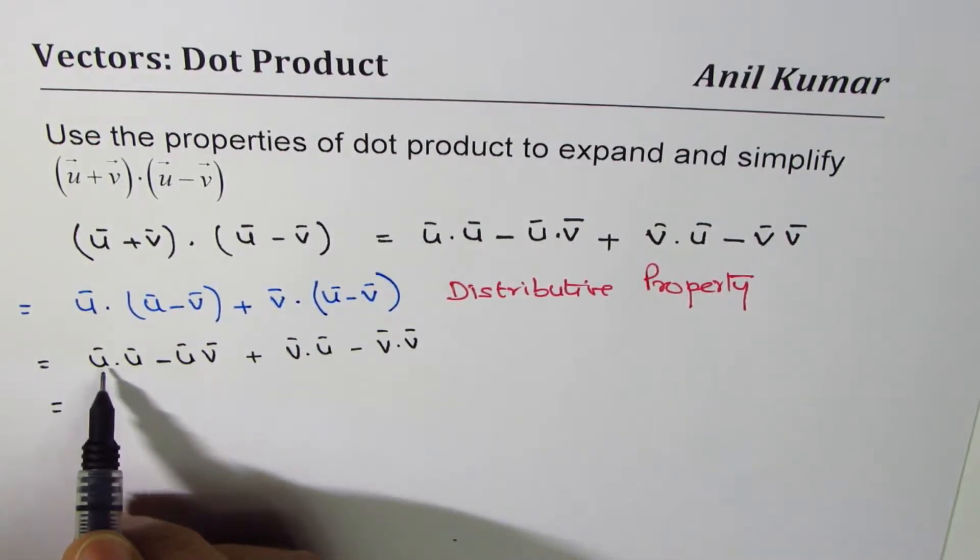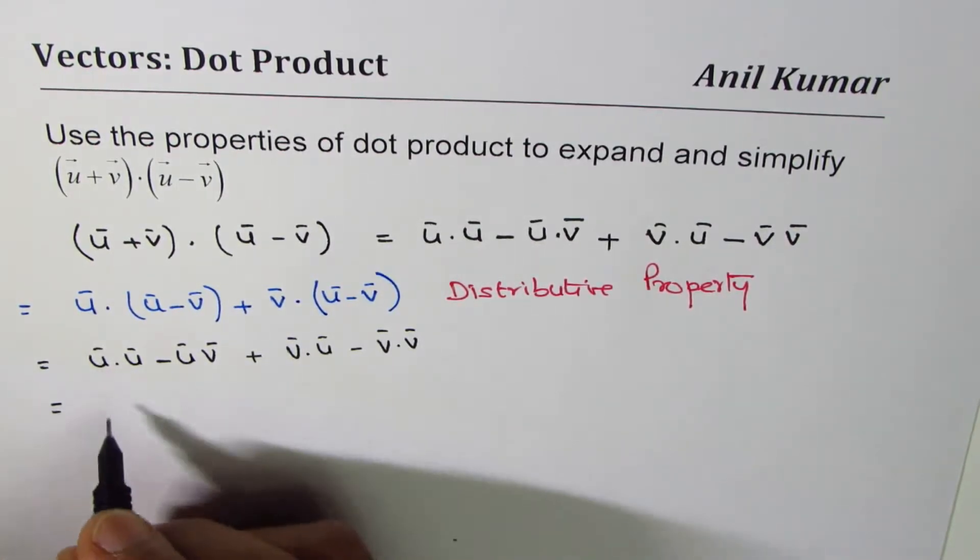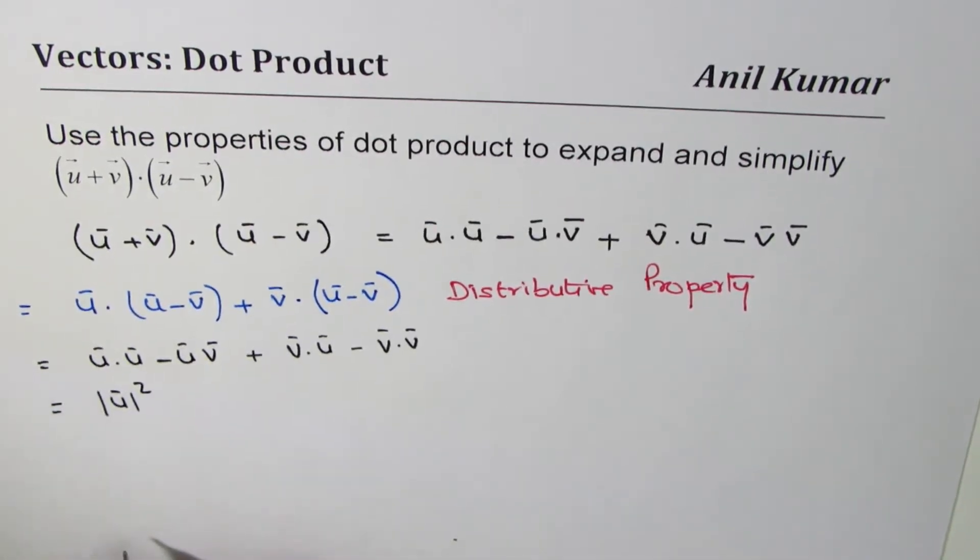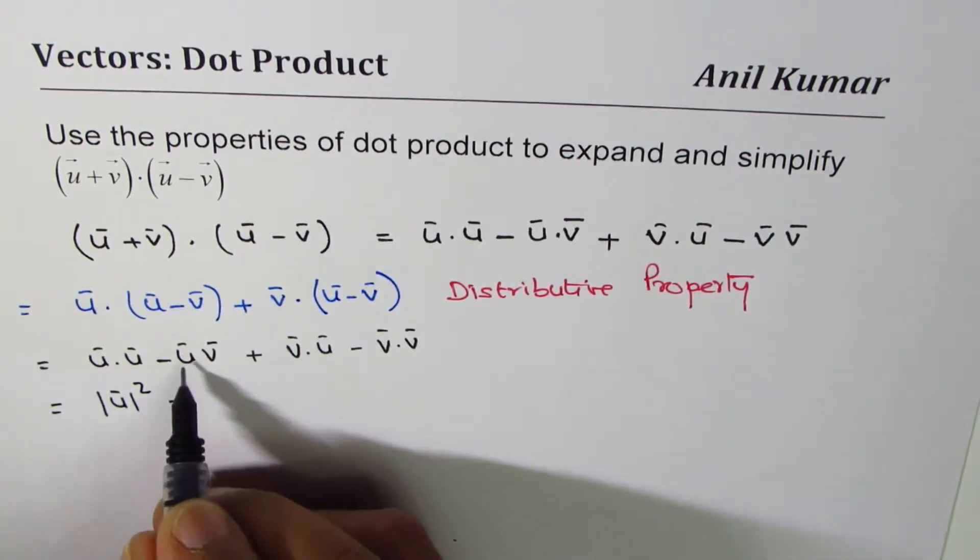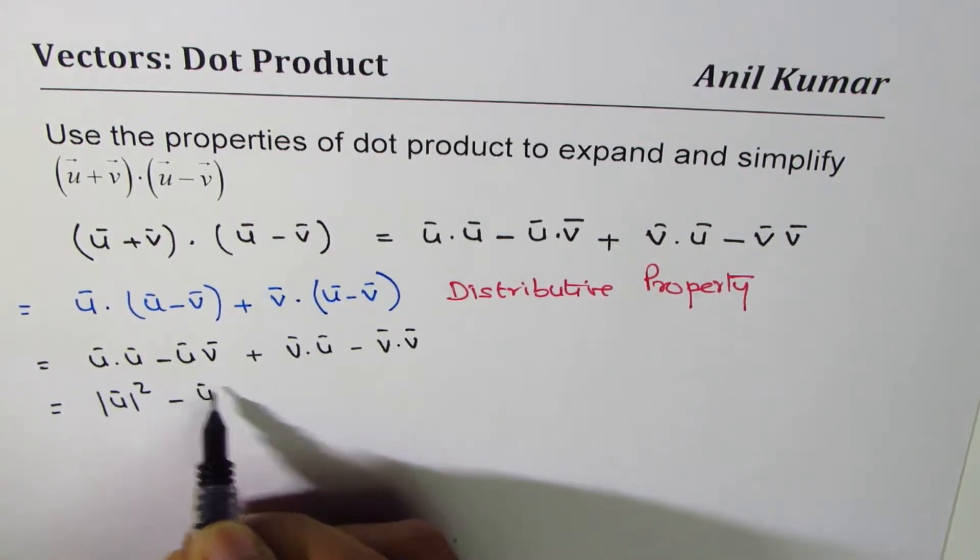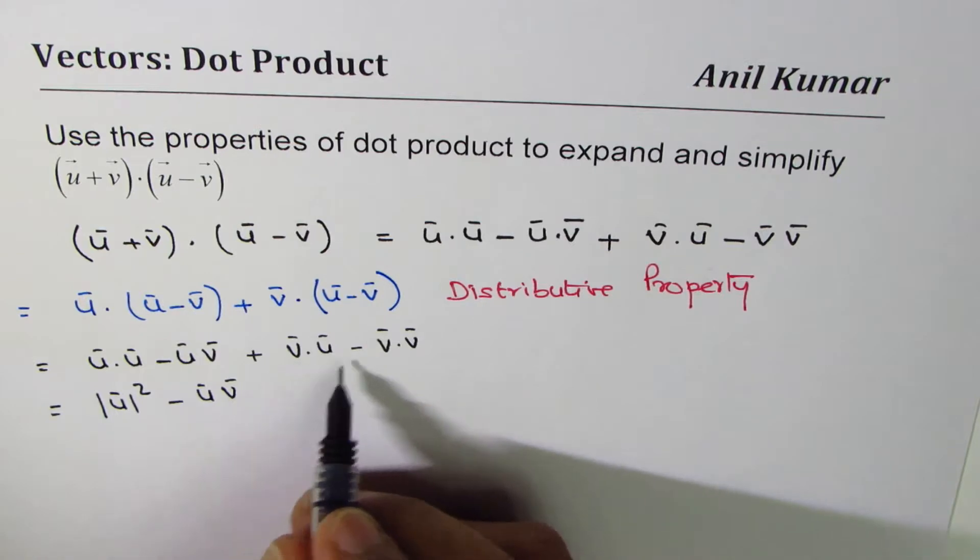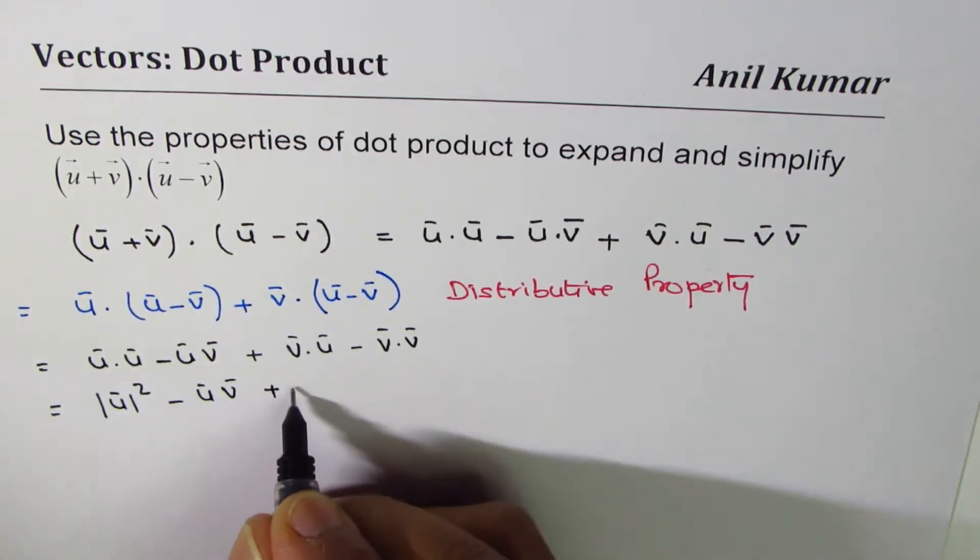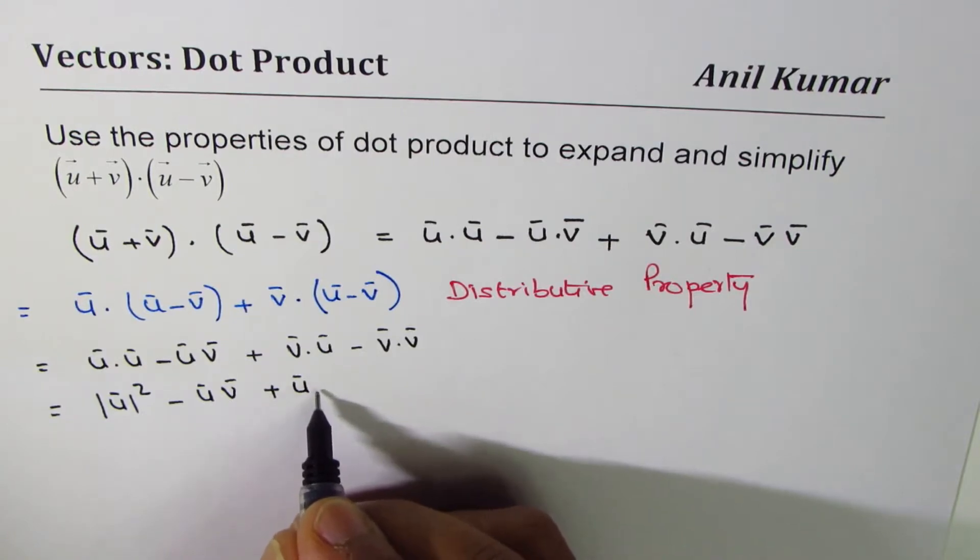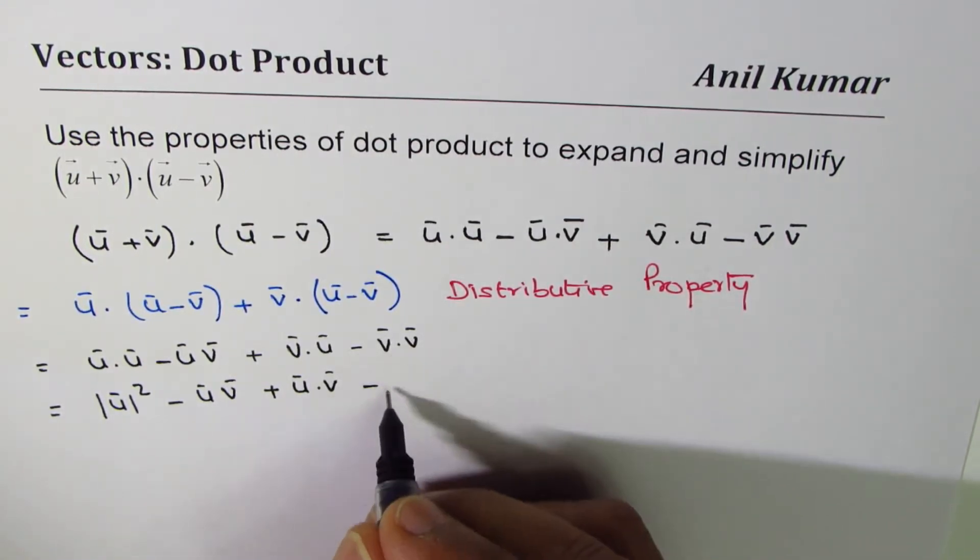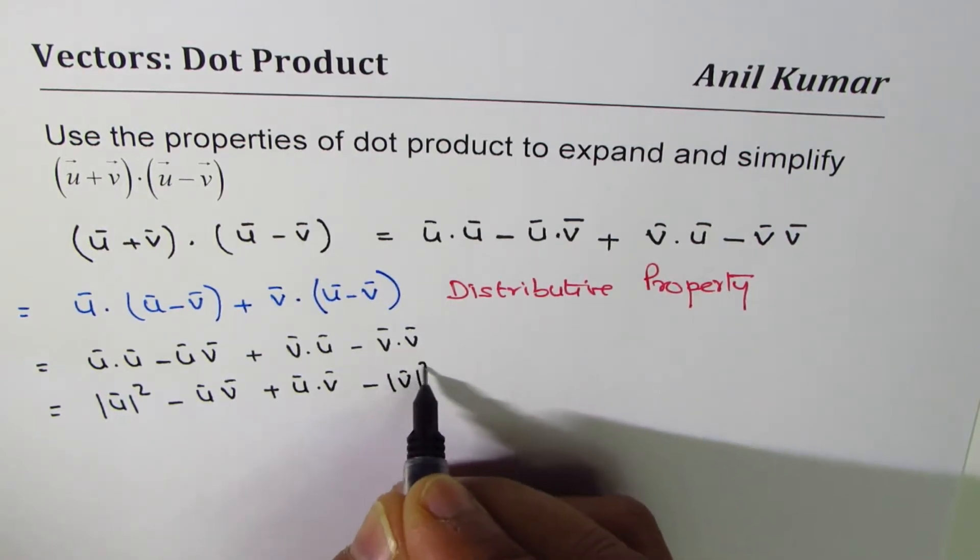u dot u is magnitude u squared, minus u dot v. And this one is plus - we could write this as u dot v. That's the commutative property. And this one is the magnitude square for v.